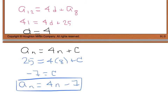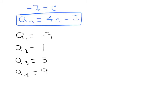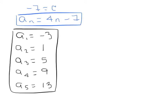So my generic equation is a sub n equals 4n minus 7. Now to find the first five terms, I'll plug in one through five for n. A sub one equals 4 times 1 minus 7, which is negative 3. A sub two equals 4 times 2 minus 7, which is 1. A sub three equals 4 times 3 minus 7, which is 5. A sub four is 9, and a sub five is 13. These are my first five terms of that sequence.